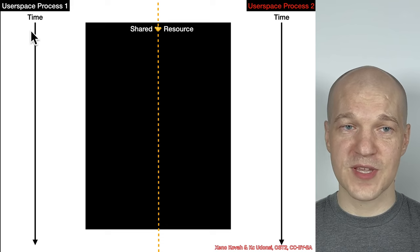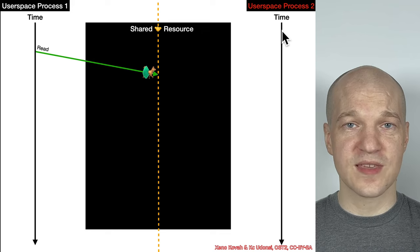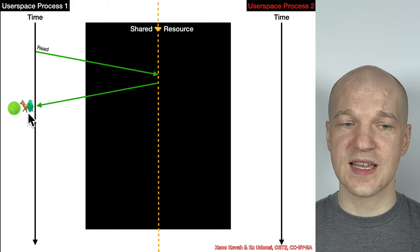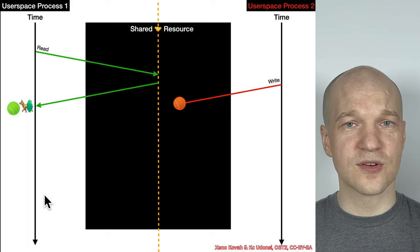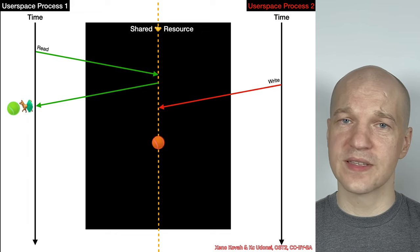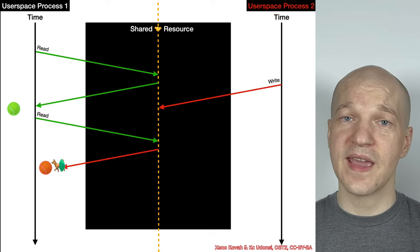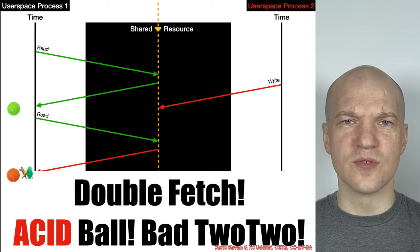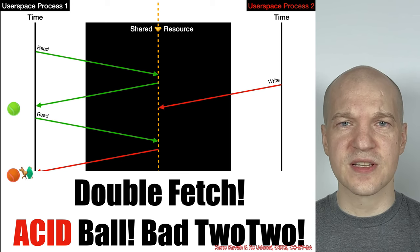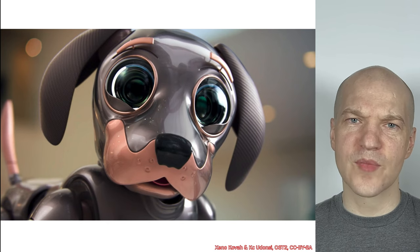Sequence diagram: non-malicious user-space process on one side, malicious user-space process on the other. The first fetch by the non-malicious process gets a clean ball of non-malicious data. Then the attacker writes a malicious ball into the shared location, and then the code fetches again for some reason — and on this second fetch, they get the malicious ball. So: bad Tutu, bad dog, don't double-fetch. Actually, you're a good dog — it's the programmer who programmed you to double-fetch who's bad.